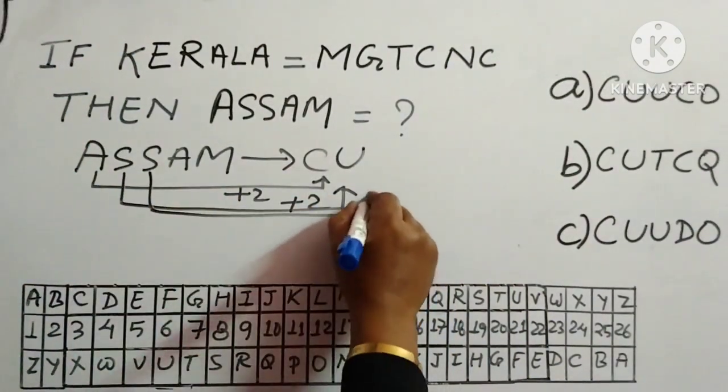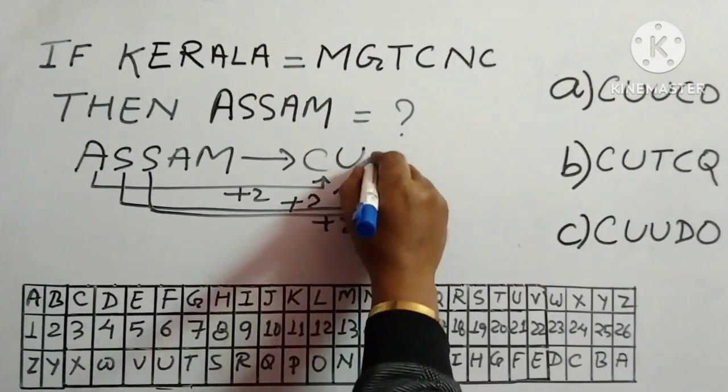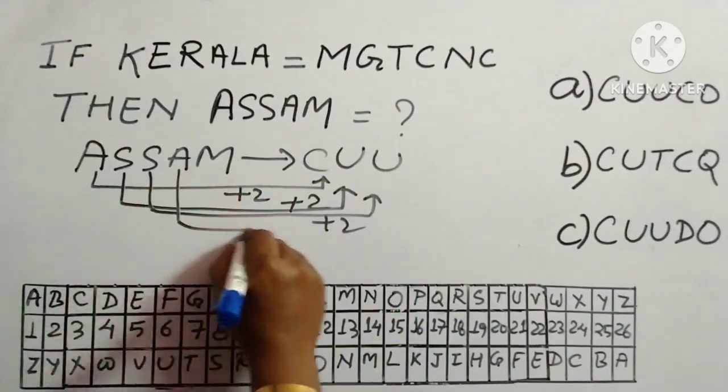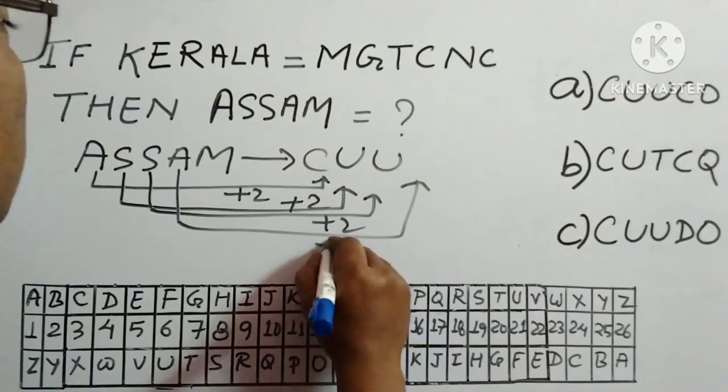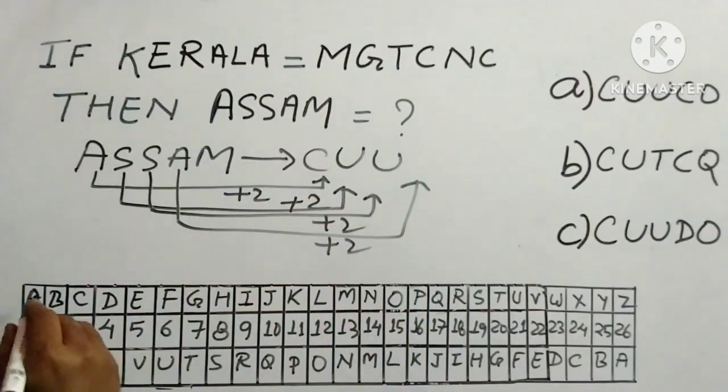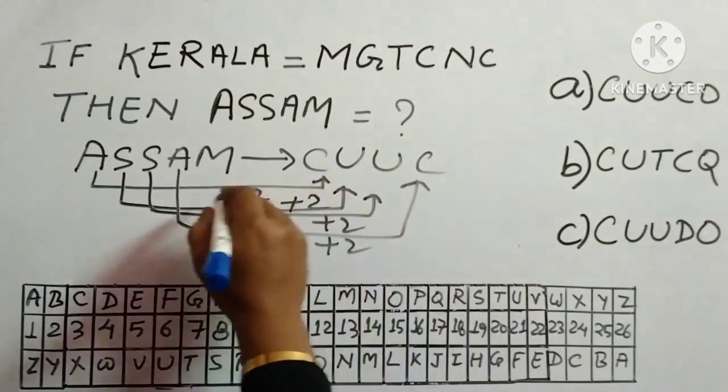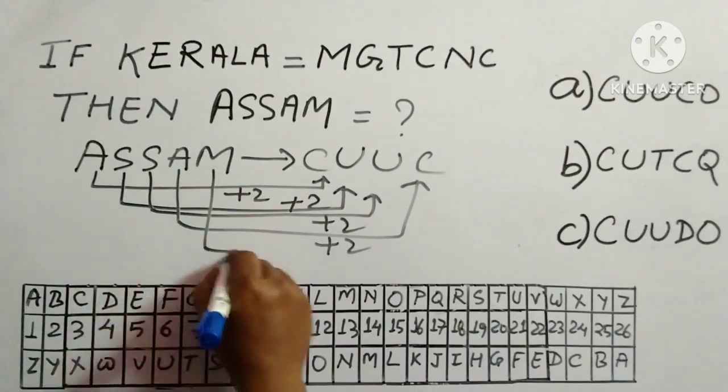S is there. So again plus 2. We will write straight away U. Then A is there. So plus 2, that means C.